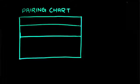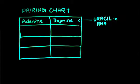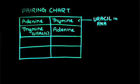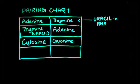These are called nucleotides and they pair up like this. Adenine pairs up with thymine or uracil in RNA, thymine or uracil in RNA pairs up with adenine, cytosine pairs up with guanine, and guanine pairs up with cytosine.